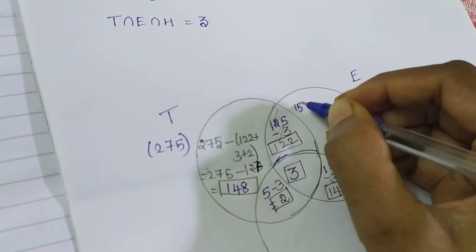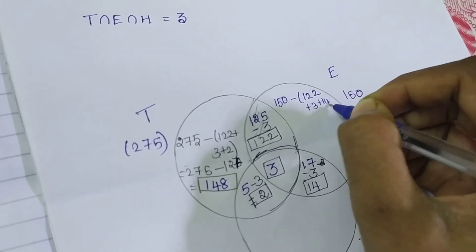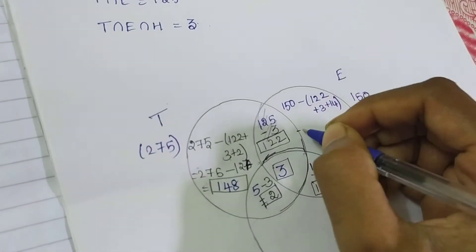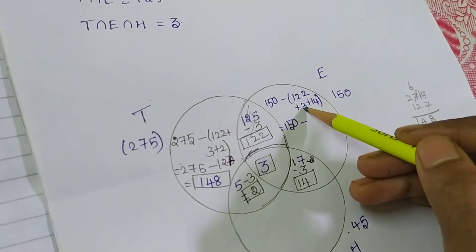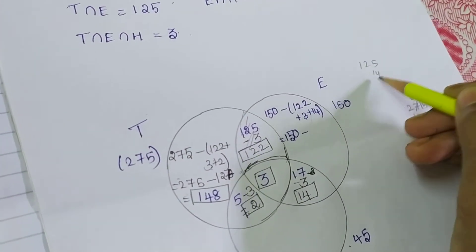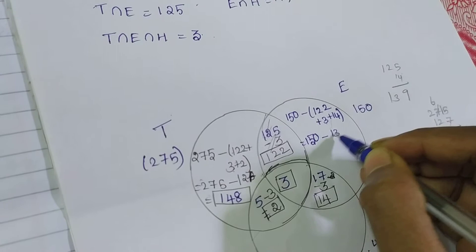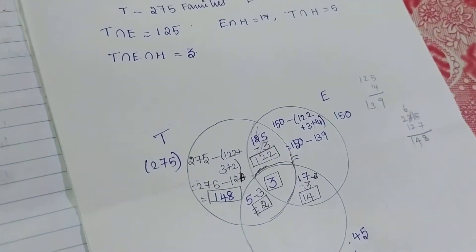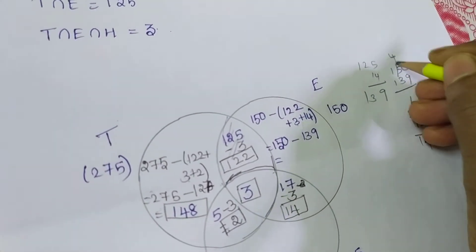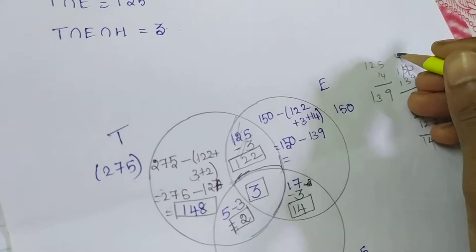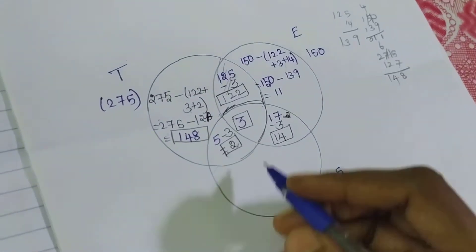For English newspaper, I have 150. Subtracting the intersection parts: 122 plus 3 plus 14 equals 139. So 150 minus 139 gives 11. I am getting 11 families for only English newspaper.